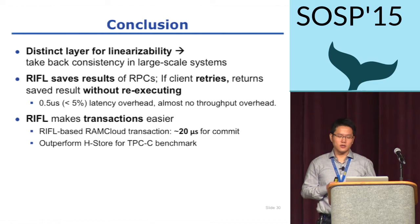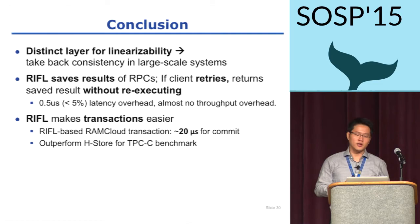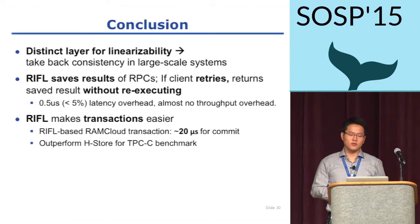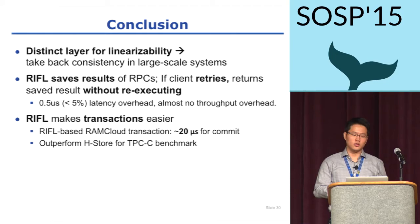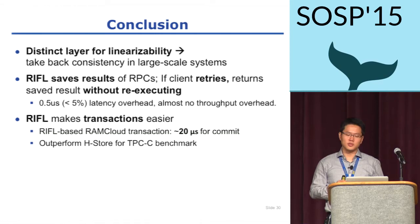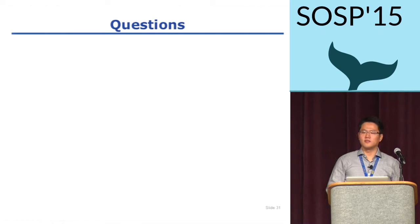We implemented linearizability on a very low-latency key-value store, and transforming simple operations into linearizable ones only added 500 nanoseconds of latency and didn't degrade throughput. The linearizability layer made implementing transactions easier, and the transactions have the lowest possible latency by design, showing about 20 microseconds of latency for simple distributed transaction commits. It also outperformed H-Store in terms of throughput and latency. Thank you for listening, are there any questions?